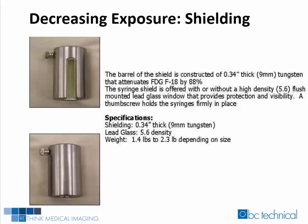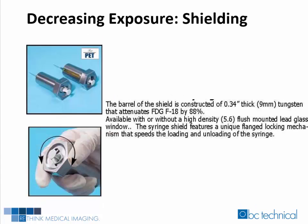Syringe shields are an integral part of every nuclear medicine department. Shown here are two different versions of syringe shields. The top shield contains a window of lead glass so that the technologist can see the fluid level in the syringe. The bottom shield does not have a leaded glass viewpoint, and both are made of tungsten. For these shields, a thumb screw keeps the shield attached to the syringe. These shields are available to fit various sizes of syringes, and the weight varies with size. Recently, some companies have instituted a variation on the thumb screw method, featuring a flanged locking mechanism that secures the shield to the syringe by turning the nut on the top of the shield. These are again available with or without a leaded glass window. Some of the newer dose pigs also have a hexagonal cutout for these shields to fit directly into the pig and or the dose injector.